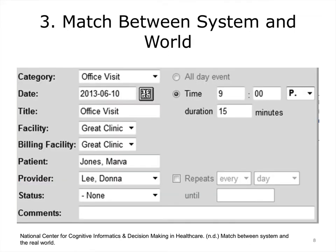The image of the system perceived by users should match the model the users have about the system. Place items and display information consistently. The items in the system should be placed according to existing standards and guidance in the real world, as well as to facilitate users' performance. For example, the primary menu should be placed on the left. This is a bad example because the system uses 'P' as the abbreviation of PM, which makes it difficult to understand.